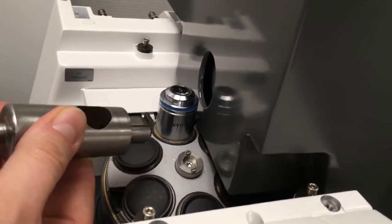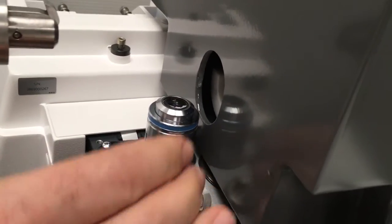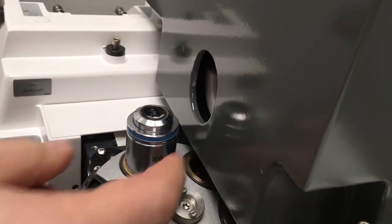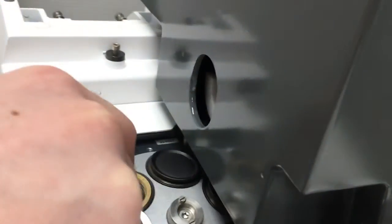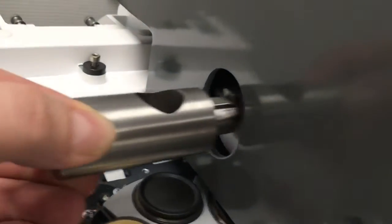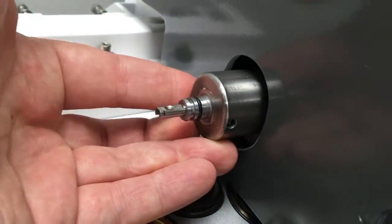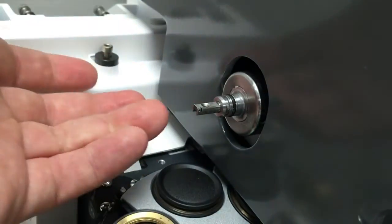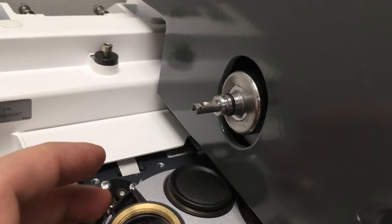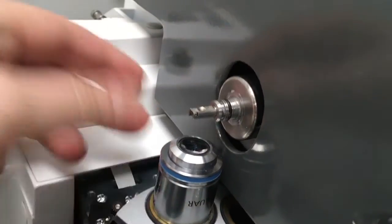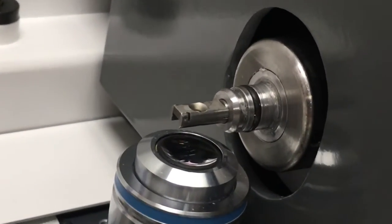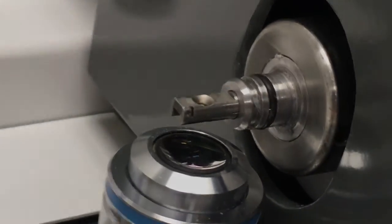Now the sample is ready and we can load it inside the machine. We remove the objective to avoid damaging it when inserting the sample, and then we get the whole thing plugged in here. The objective goes back in place and we can start imaging.